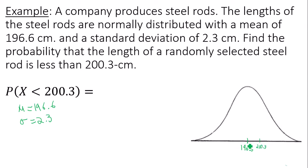Now this mean 196.6 splits my bell curve into two regions that are each 50 percent. So to the left of 196.6 is 50 percent or probability of 0.5, and to the right is 0.5.